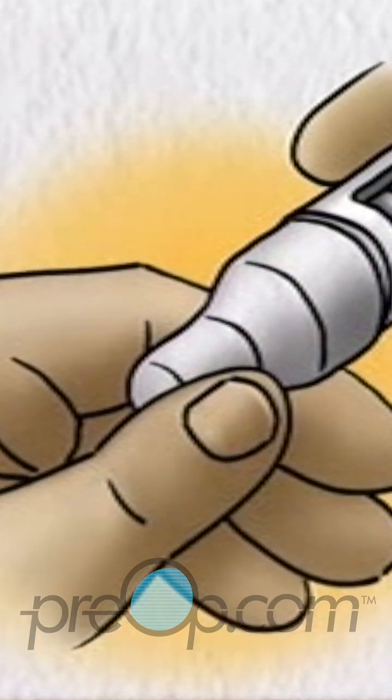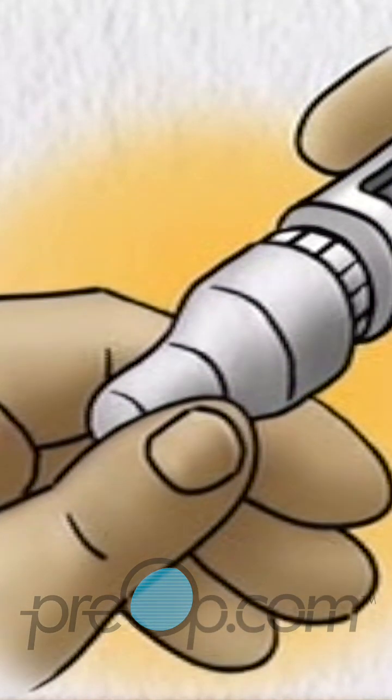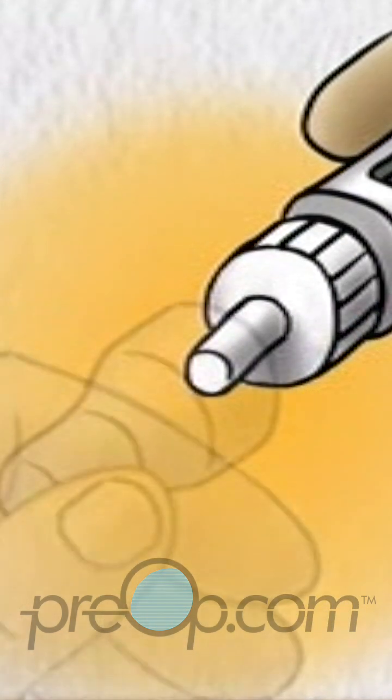Pull the outer shield off the needle. Do not throw it away. You will need it later to remove the needle unit from the pen.